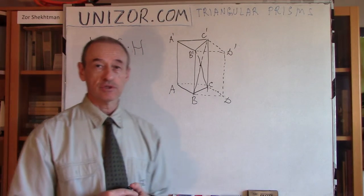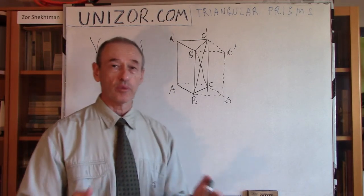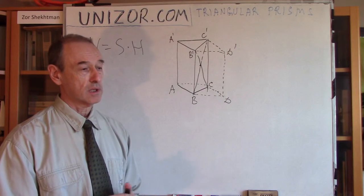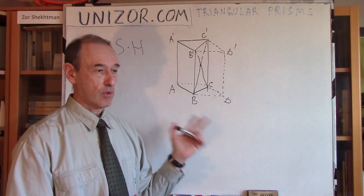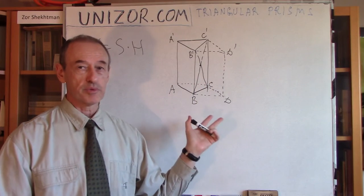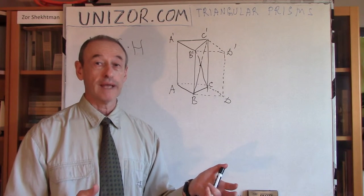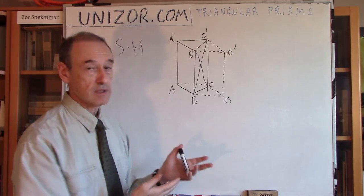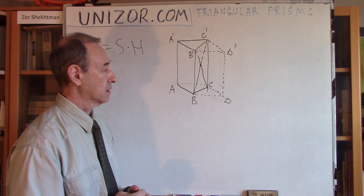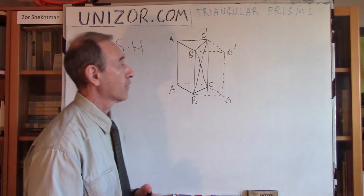Basically, that's all I wanted to say today about triangular prisms. Certain problems will be introduced a little bit later, but this is just theoretical material. We can always call the triangular prism a right prism, as I said before, if the side edges are perpendicular to the base. Also, if the base is a regular equilateral triangle, then the prism based on this — if triangle ABC is equilateral — can be called a regular right prism.